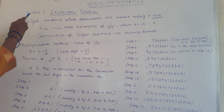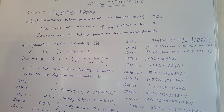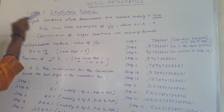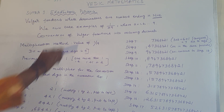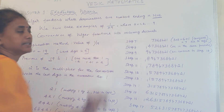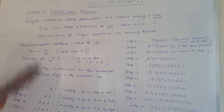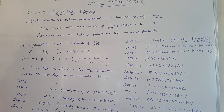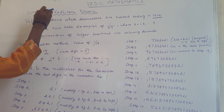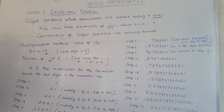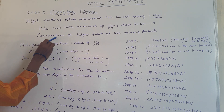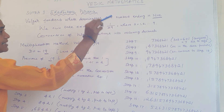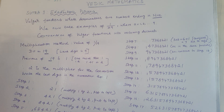Hello students. In this class we are going to see how to convert vulgar fractions whose denominators are numbers ending in 9. To convert such vulgar fractions into recurring decimals, we can use in Vedic Mathematics Sutra 1, Ekadhikena Purvena. We are going to apply this sutra. Ekadhikena means one more than the previous. Conversion of vulgar fractions into recurring decimals can be done by applying this sutra.